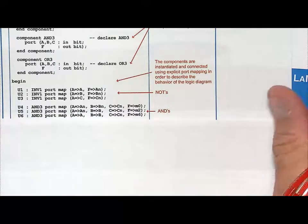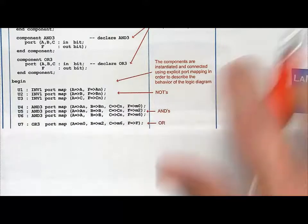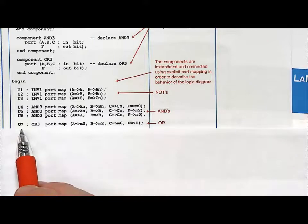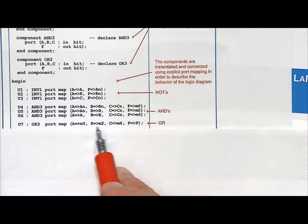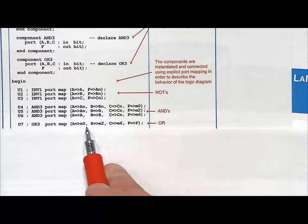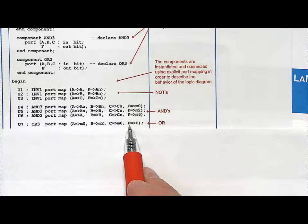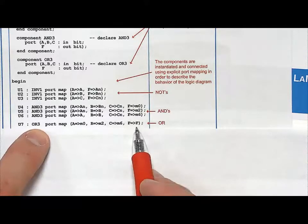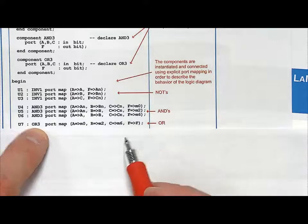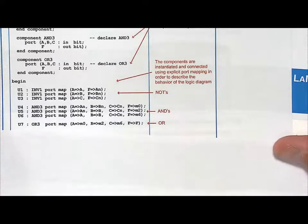And then finally I need to instantiate one OR gate. I just called it U7. And I said OR3, port map. And then I just connected these three signals together, M0, M2, and M6. And the output was F to F. So this was the lower level port name of the OR3. And this was the signal name of what was at the top level, which was F, which actually was the port output of the entire thing. And I'm done.